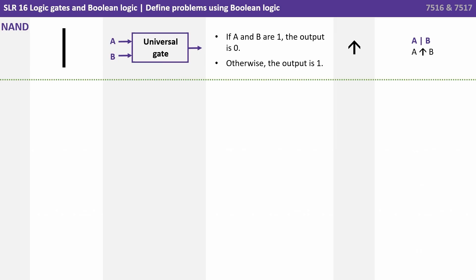We also have the NAND operator. Now this is a type of universal gate because, as we'll see in other videos, all other gates and their logic can actually be made up by a set of NAND gates. This is NOT AND. So what happens here is if A and B are 1, the output is 0. It's the opposite of an AND gate, and this is represented by a vertical line.